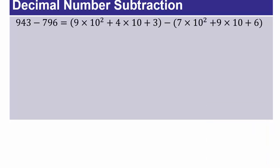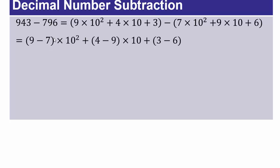Using the same principle for the next problem, we combine like units: 9 minus 7 hundreds, 4 minus 9 tens, and 3 minus 6 singletons. This gives 2 hundreds, negative 5 tens, and negative 3 singletons. This is an interesting problem because we can't write a final decimal number answer with negative place values — we'll need to borrow. We have negative 5 tens, meaning we borrowed 5 tens — we are in debt. We also have a negative 3 in the units.